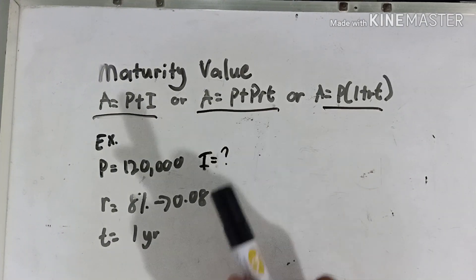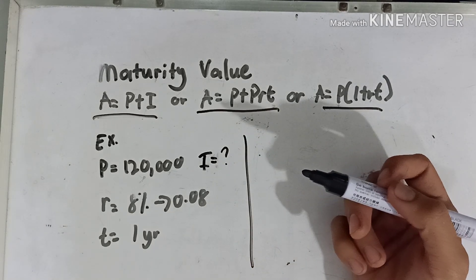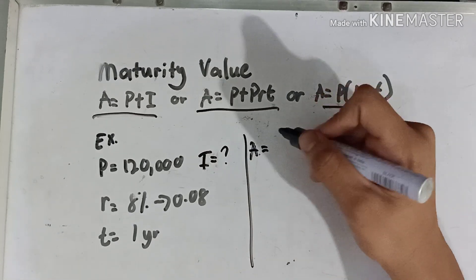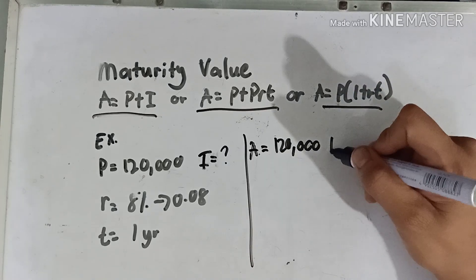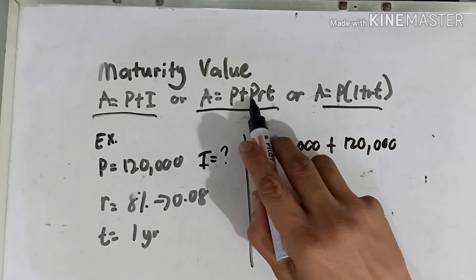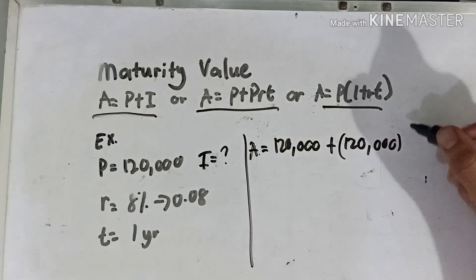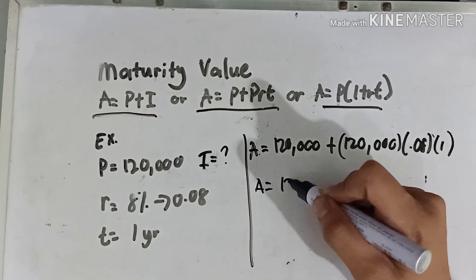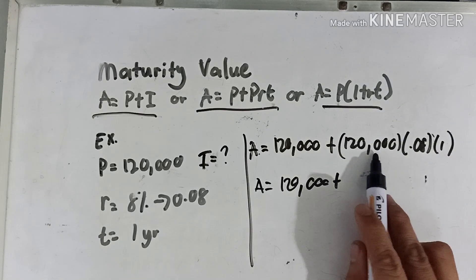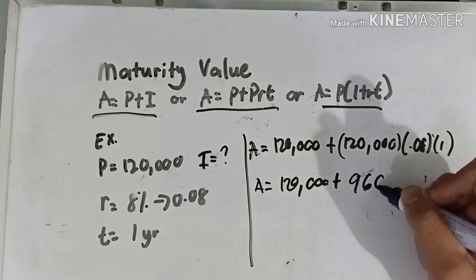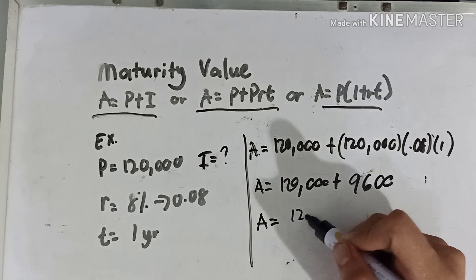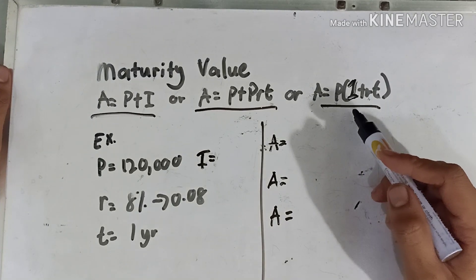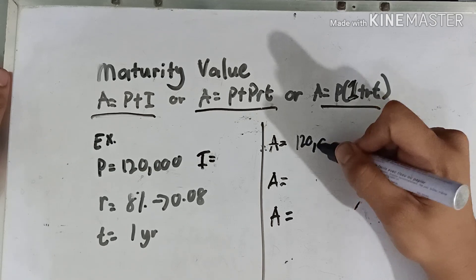Let's have another example using the formula A = P + Prt. This time, we don't have a given value for I, but we have P, r, and t. So A equals 120,000 plus 120,000 times 0.08 times 1 year. That gives us 120,000 plus 9,600, so the maturity value is equals to 129,600.